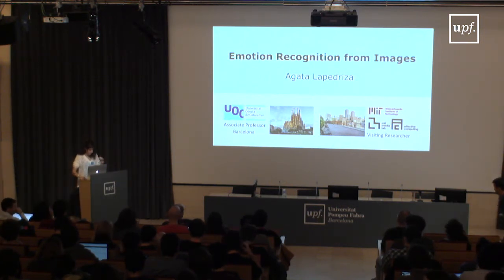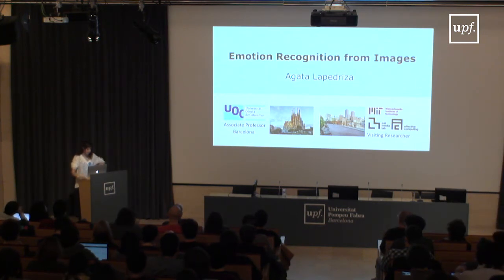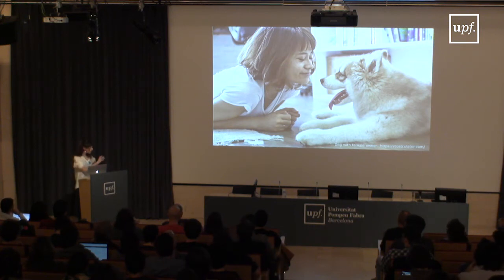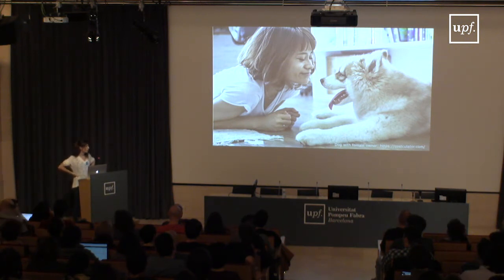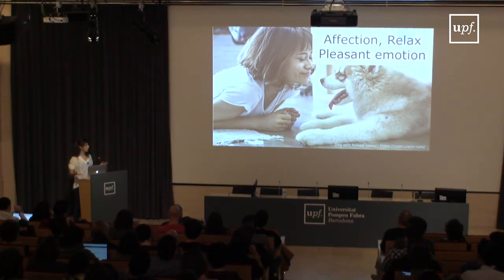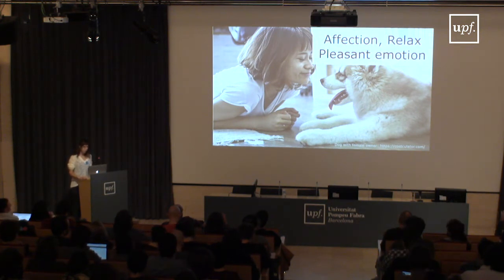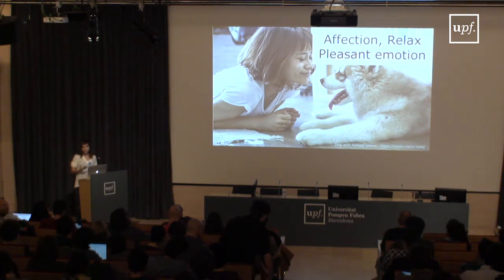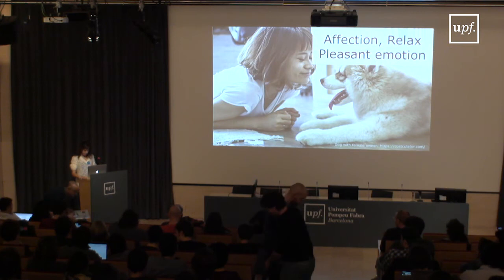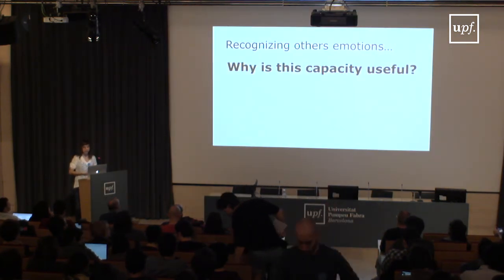Following the last part of Francesca's presentation, I'm going to talk a little bit more about emotions. The idea of this project: when we look at an image like this one, we can recognize a lot of emotional information. We can see how this person is showing affection towards her dog, that she seems relaxed, lying on the floor in probably her apartment. Overall she's showing a pleasant emotion.